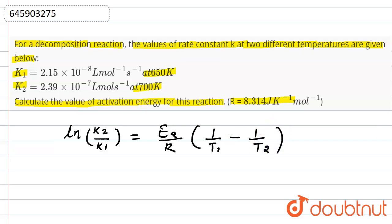Now put all these values that we know here. The value of k2, that is at temperature 700 Kelvin, will be k2, so k2 is given as 2.39 into 10 to the power minus 7. And value of k1, that is 2.15 into 10 to the power minus 8.